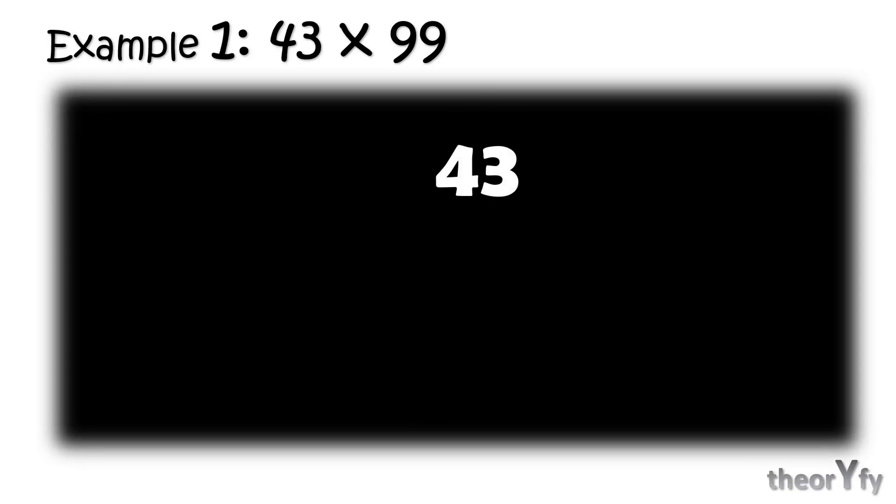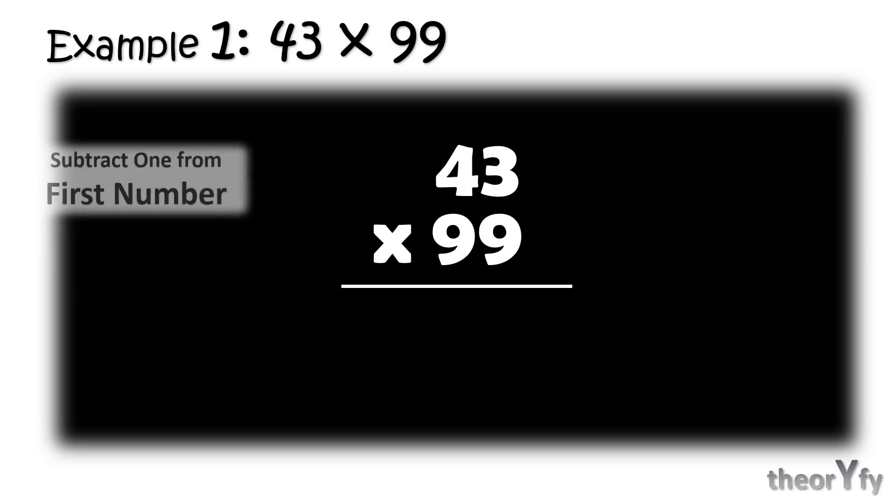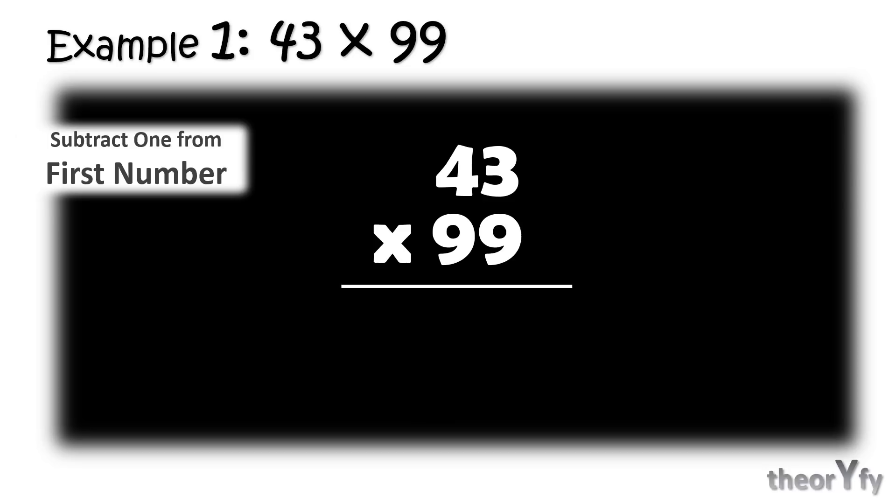So let's start with Example 1. As you can see, this is a very simple calculation: 43 into 99. The purpose here is to understand the method properly with the steps involved. So what you have to do is multiply 43 with 99. As you can see all nines are there and number of nines are also equal, so this is Type 1.